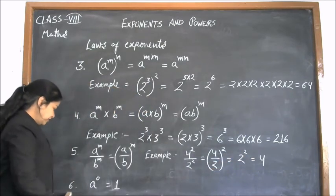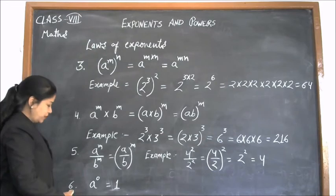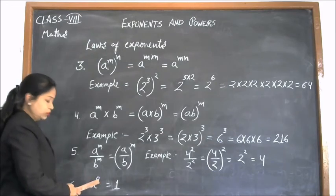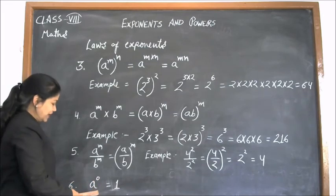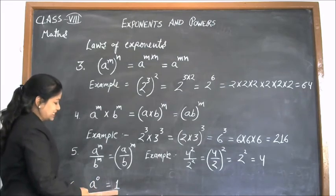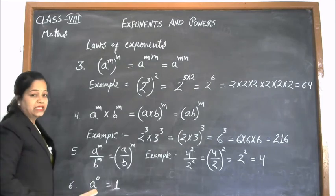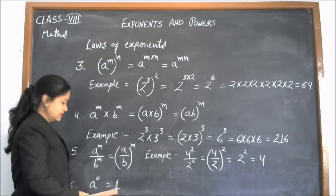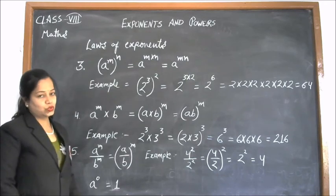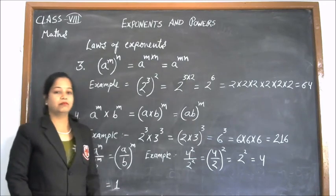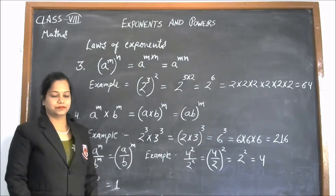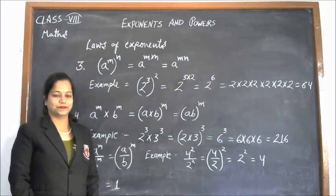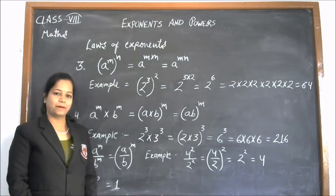And our next important law is a to the power 0. If we have a to the power 0, the value is 1. Anything to the power 0 is 1. So students, these are the important laws of exponents. Practice such problems at home. Till then, take care. Bye bye.